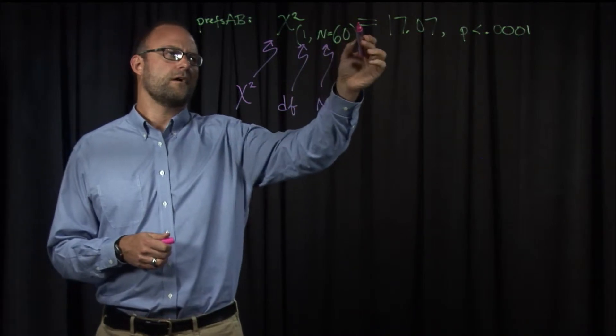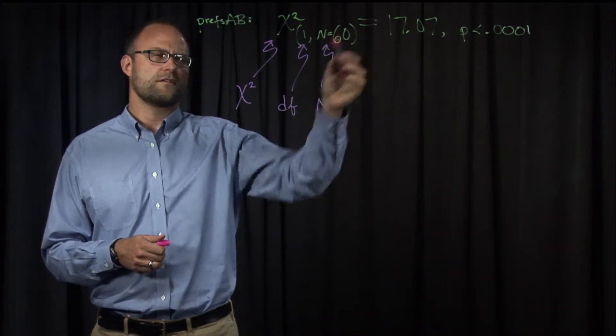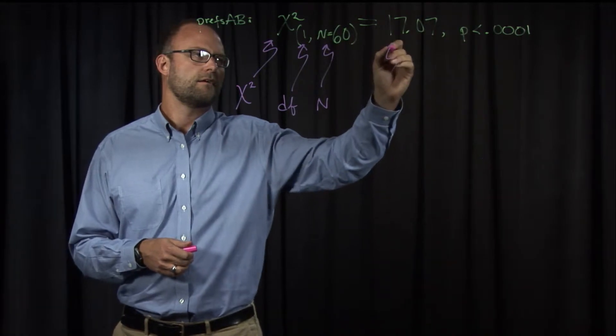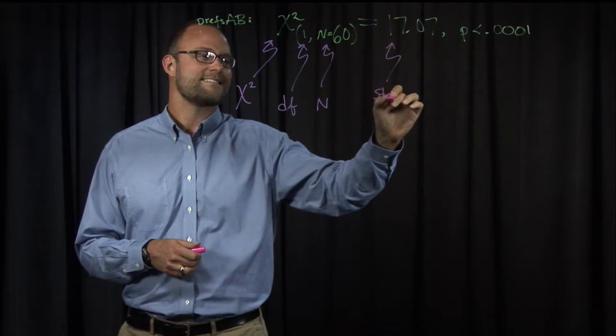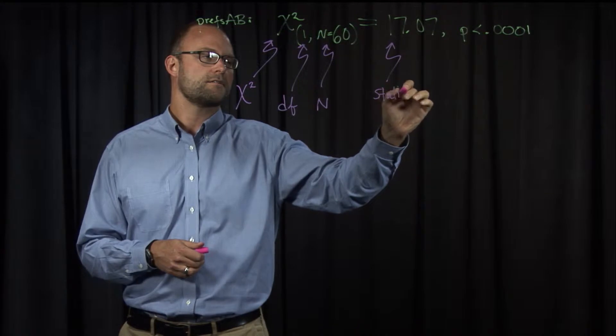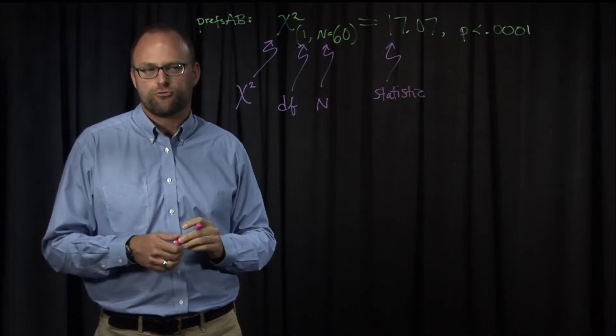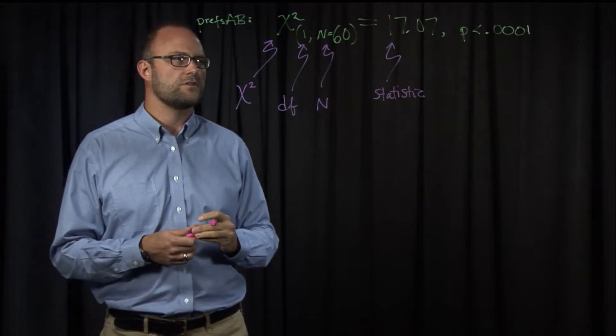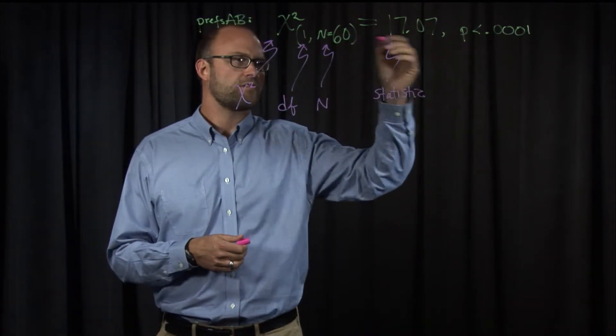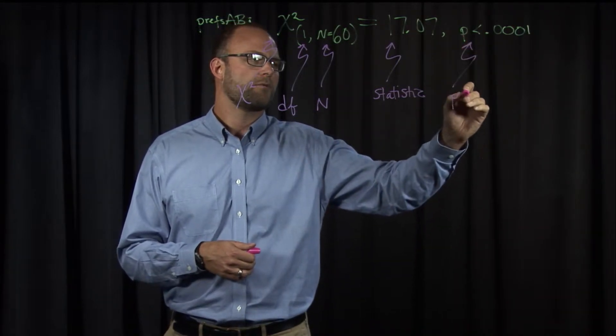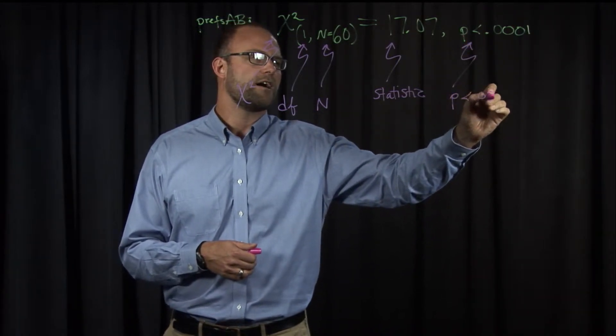Then we have, on the main line again, full size, an equal sign for the result of the test. This is the test statistic. There we go. And that's the chi-squared value, which is the result, and corresponds to, along with its number of cases and degrees of freedom, produces for us a p-value, which here you can see is less than 0.05.